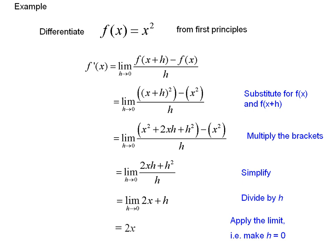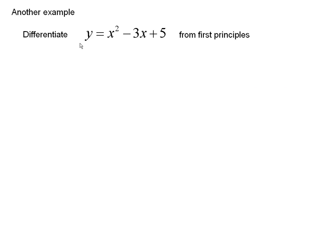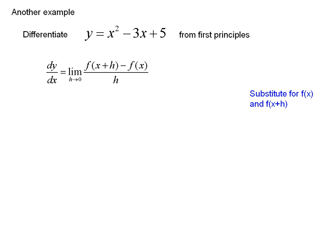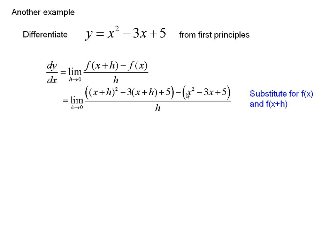Next, we're going to do another example. Here is our derivative: y equals x squared minus 3x plus 5, using our definition. And this time, because it was y, we write dy dx — it doesn't really matter, but it just makes it a bit easier. Again, substituting for f of x and x plus h. f of x is easy — just write down the same thing. f of x plus h: replace all the x's with x plus h.